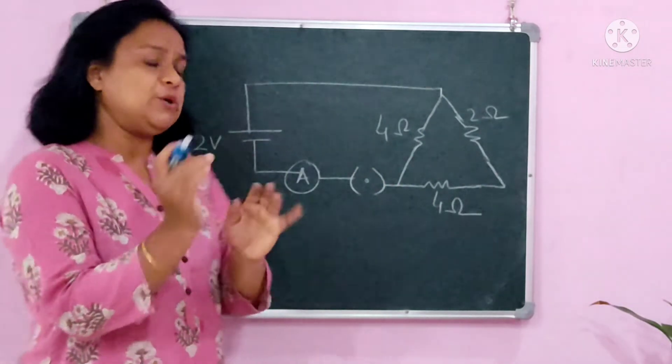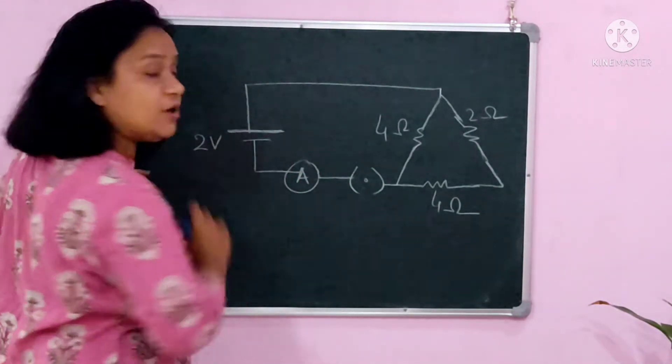You all know current flows from positive terminal to negative terminal. This is the longer one, which means the positive terminal of the battery.